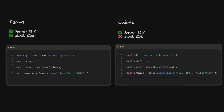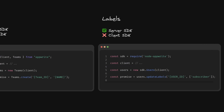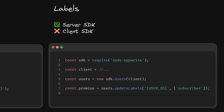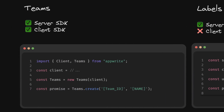One important technical distinction: labels can only be created and modified from the console or the server-side SDK — you cannot create or modify labels from the client-side SDK. Teams, however, can be created and modified from both the client and server SDK. That's it for this video — leave feedback in the comments and subscribe to the Appwrite YouTube channel.